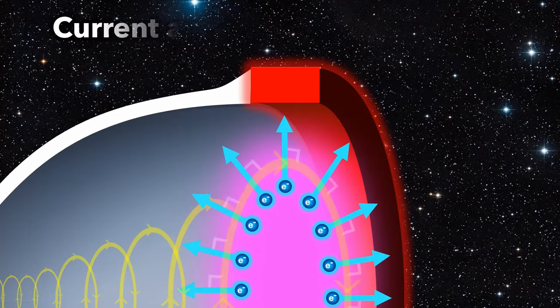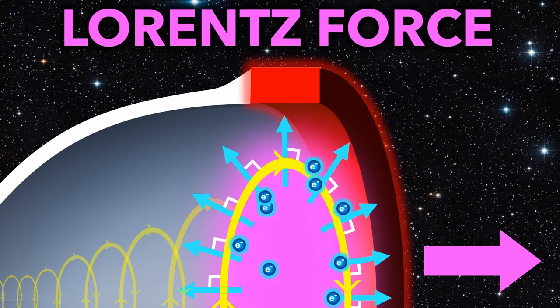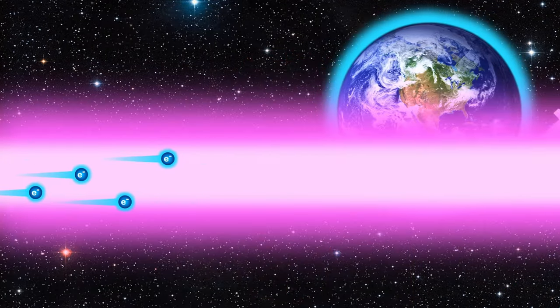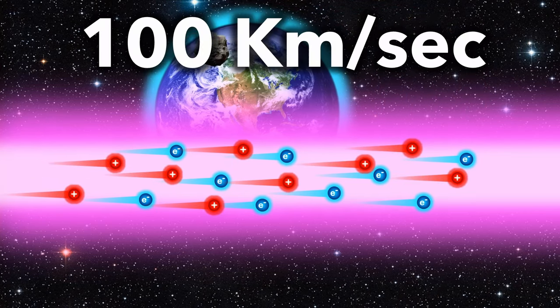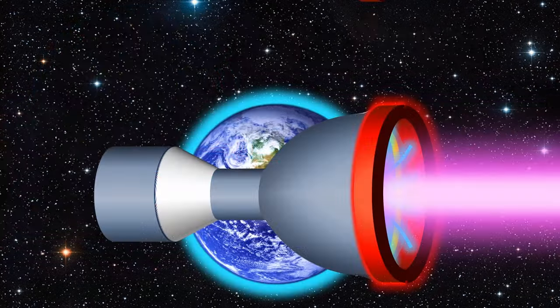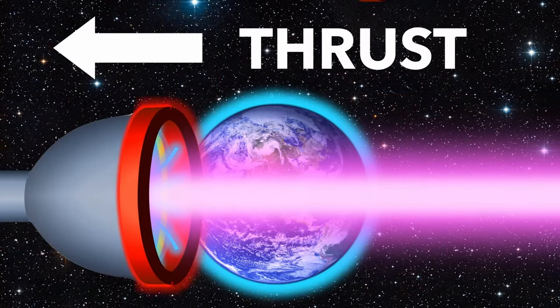The electrons move outward through the circular magnetic field and experience a Lorentz force to the right. As the electrons are pushed out of the thruster, they also drag the protons with them. The plasma reaches speeds of up to 100 km per second. And the reaction from firing the plasma creates thrust.